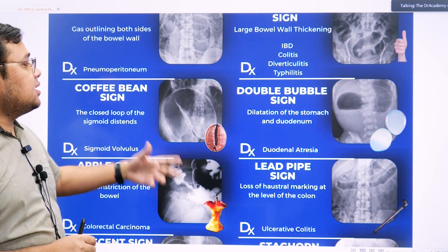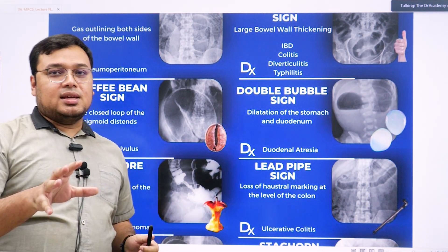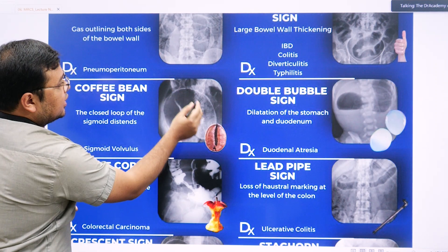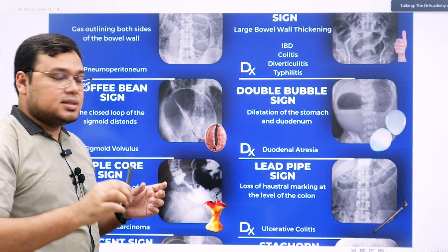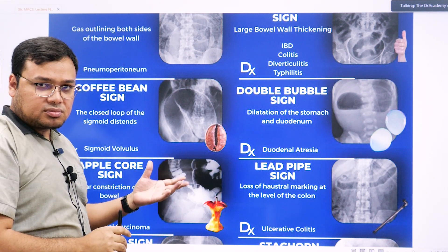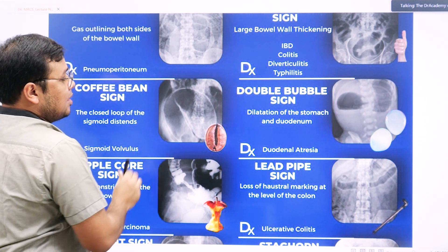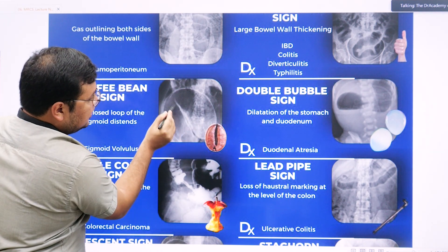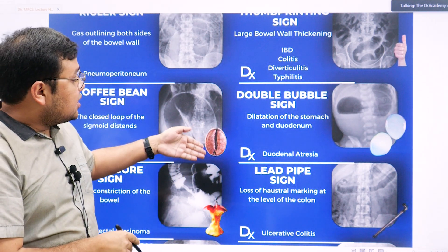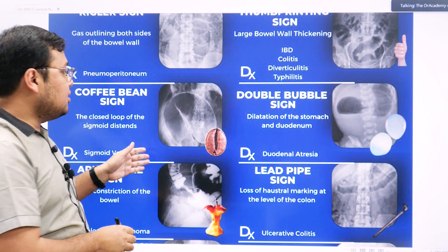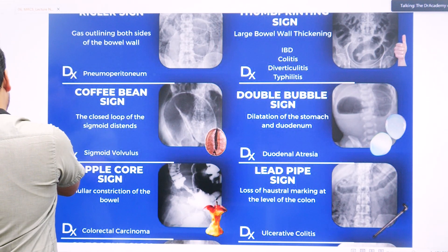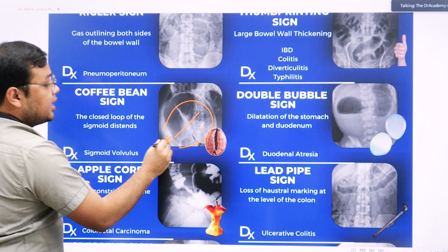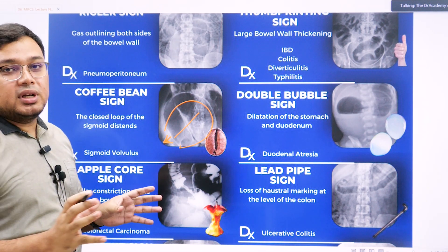The coffee bean sign is very frequently asked in exams. The coffee bean sign is found in sigmoid volvulus — it's a very classical example. It looks like a coffee bean, and you have to know the axis. It's a very dilated loop of the intestine. The axis of the mesentery — if the mesentery is attached to it, the direction is toward the left lateral side. The left lateral fossa is most commonly associated with the sigmoid. In the reverse scenario, if the axis is toward the right side, think about cecal volvulus.